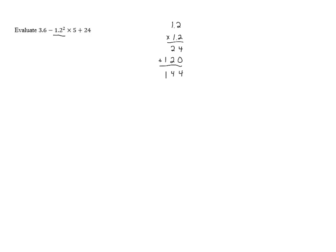We get 1, 4, 4. Now, there are two digits to the right of the decimal places in the problem, so we need to put the decimal point in the answer so that there are two digits to the right of it. That gives us 1.44. So this problem becomes 3.6 minus 1.44 times 5 plus 24.